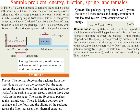Let's do a sample problem. A 2-kilogram package of tamales slides along a floor with speed V1 equal to 4 meters per second. It then runs into and compresses a spring until the package momentarily stops. Its path to the initially relaxed spring is frictionless, but as it compresses the spring, a kinetic frictional force from the floor of magnitude 15 newtons acts on the package. While sliding over to the spring there's no friction, but once it hits the spring there's a rough surface with friction. If the spring constant is 10,000 newtons per meter, by what distance D is the spring compressed when the package stops? During the compression, kinetic energy is transferred to potential energy and thermal energy.